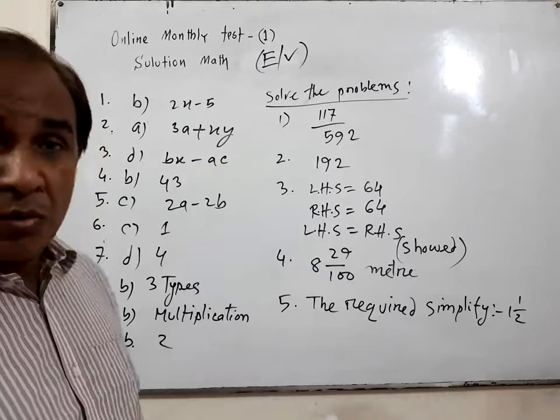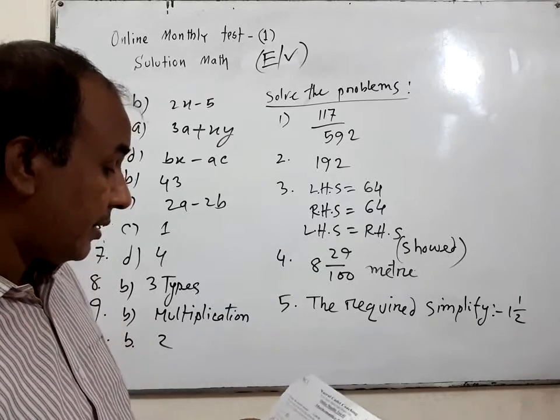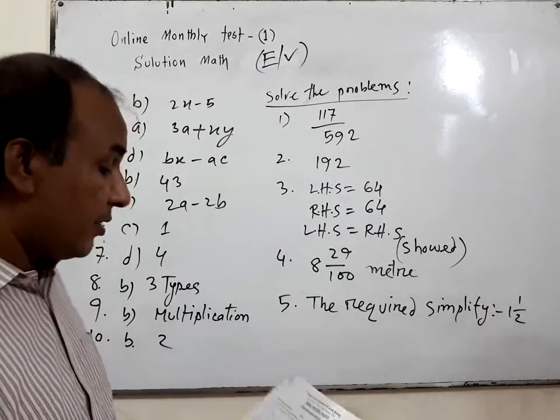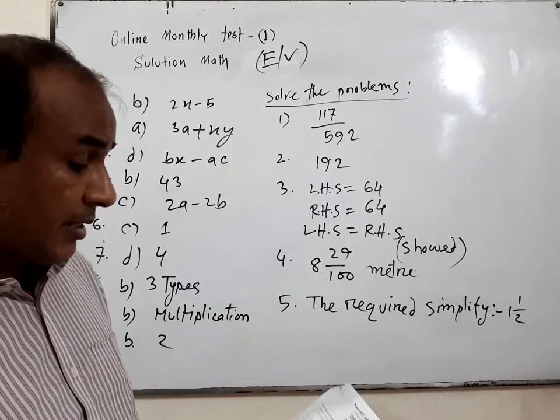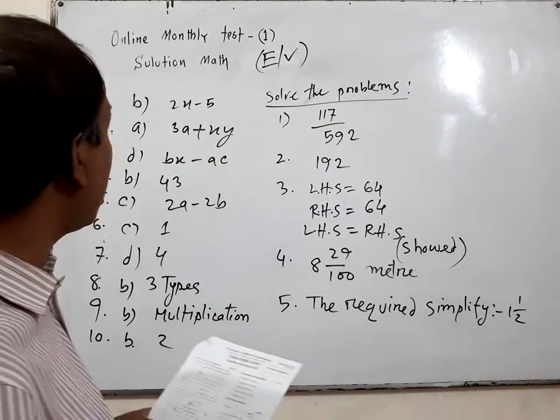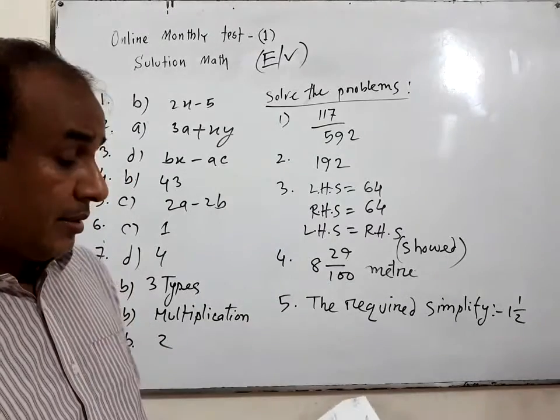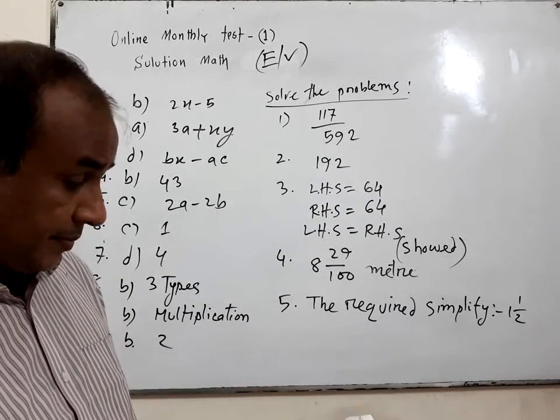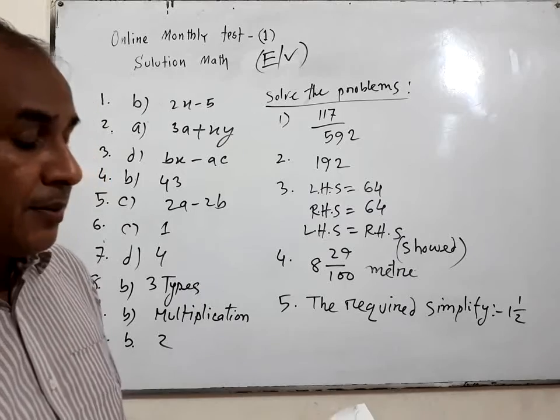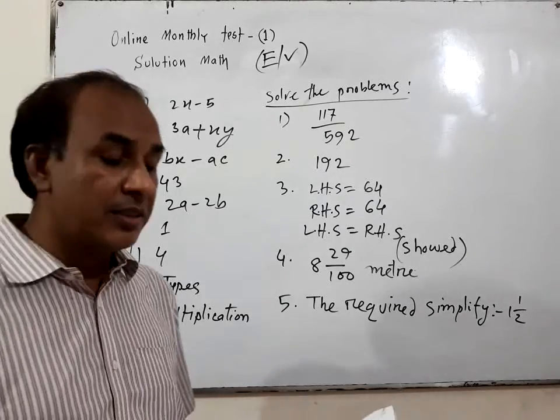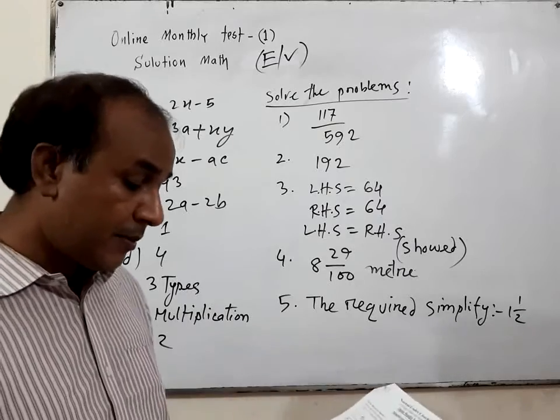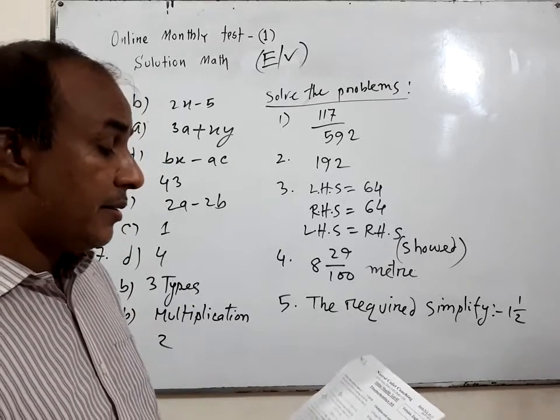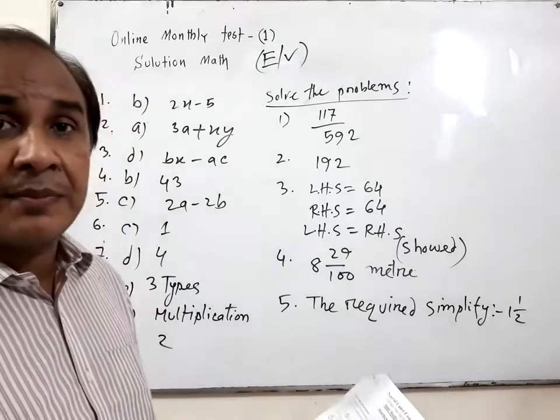Online monthly test 1. There were 10 MCQ questions, and you have to write the answer in your sheet. Also 5 definitions with examples, and there was few mathematics. Full marks is 55.